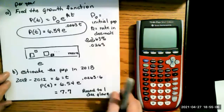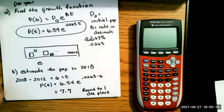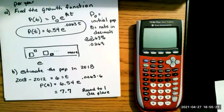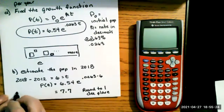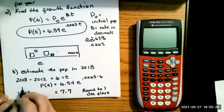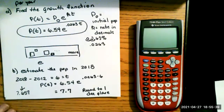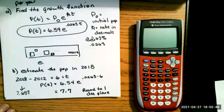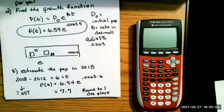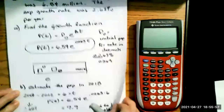The calculator gives 7.657. They want one decimal place. Because the second decimal is a 5, you round the 6 up to a 7, giving 7.7. All of this is on the lecture notes already posted.